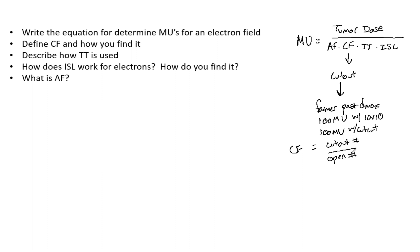CF equals the cutout number divided by the open field number, and that is how you get your cutout factor. You should do these pretty often if you're in a clinic, especially if you treat electrons.